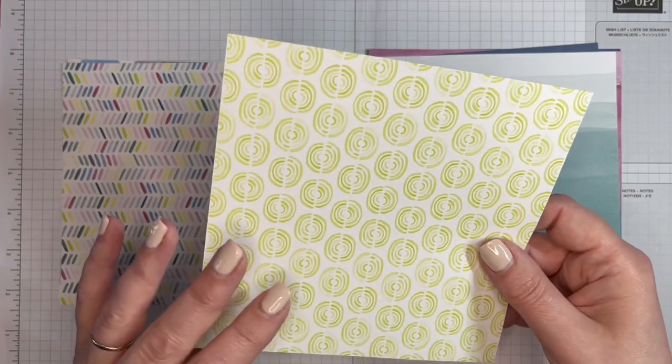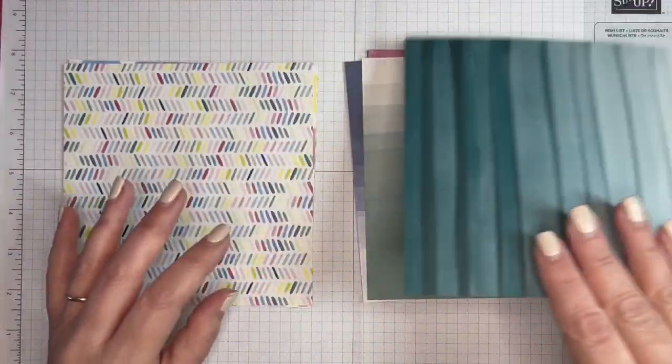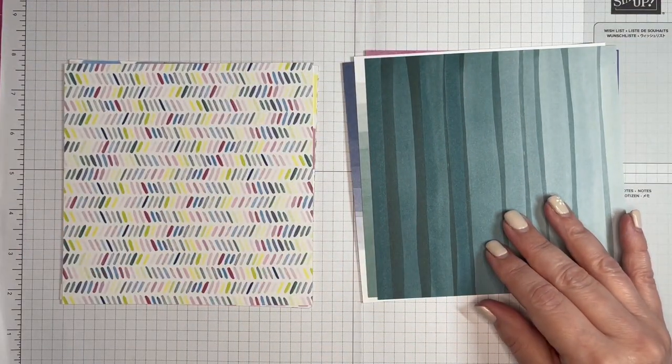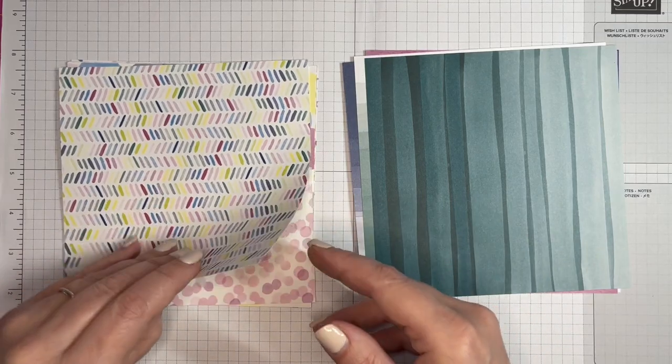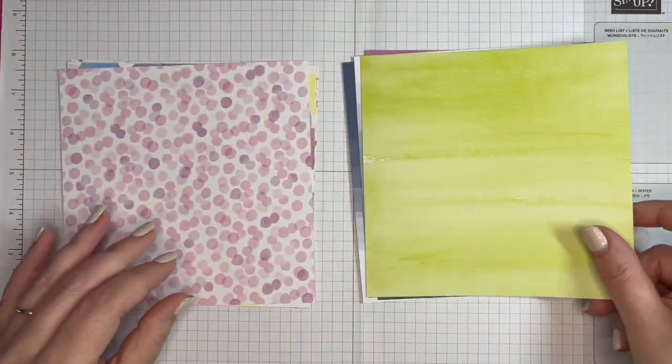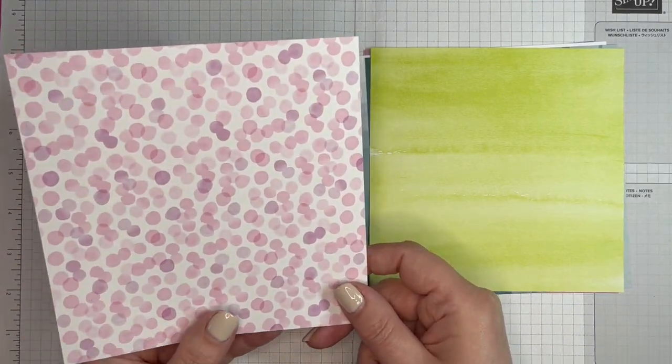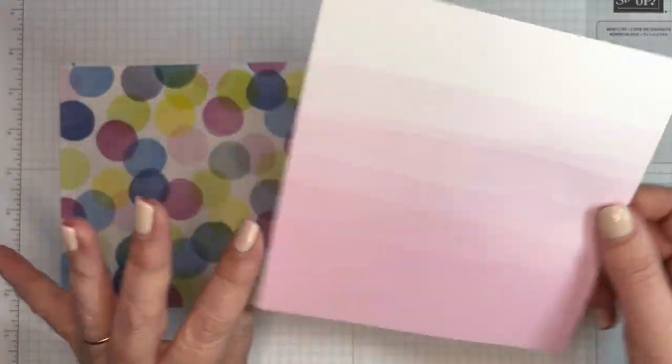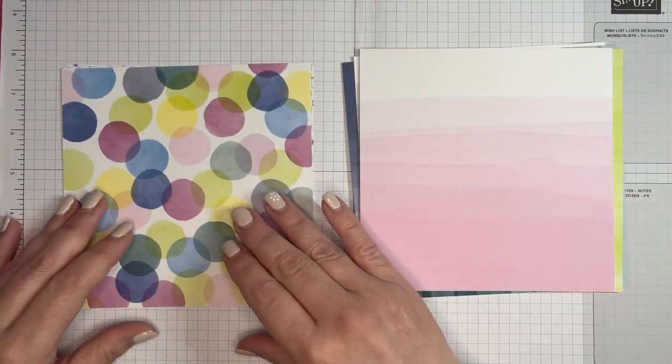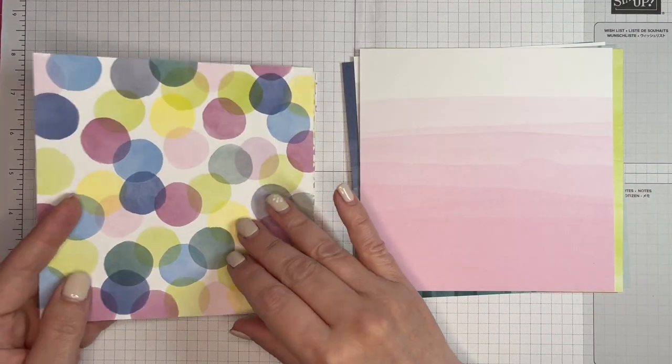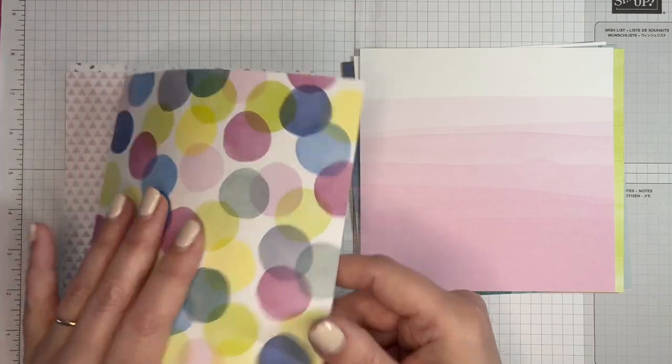The colors in this pack are Azure Afternoon, Berry Burst, Blueberry Bushel, Bubble Bath, Fresh Freesia, and Lemon Lime Twist.